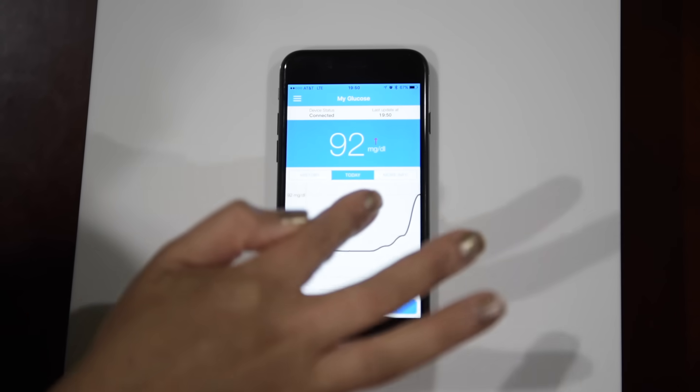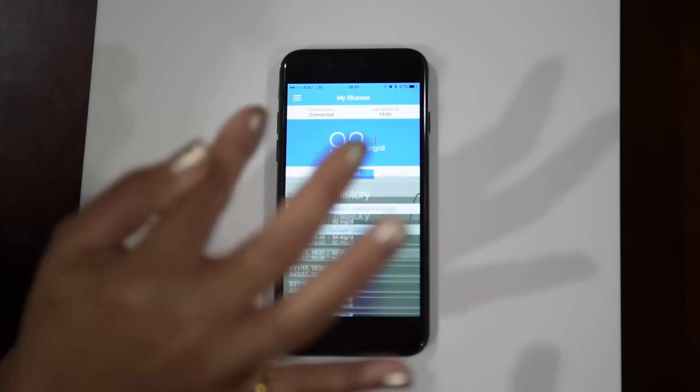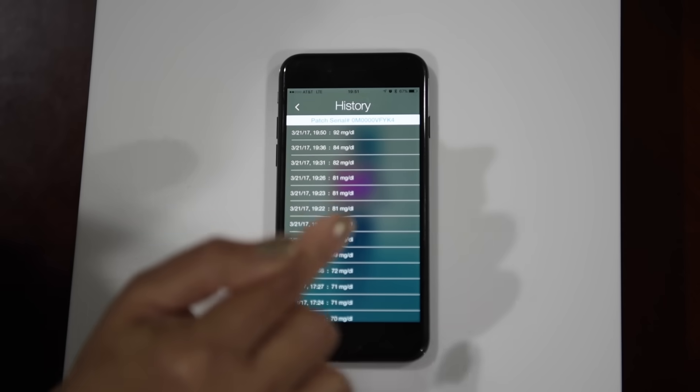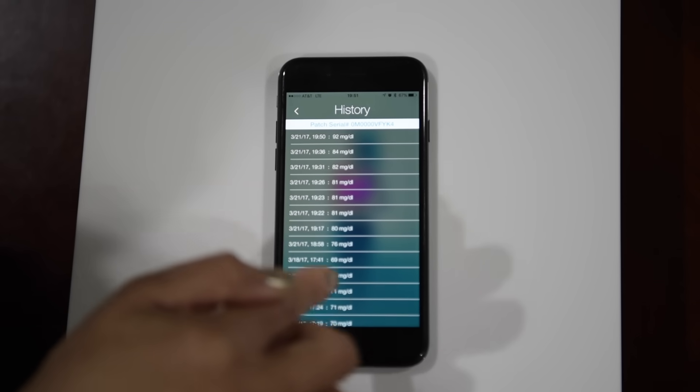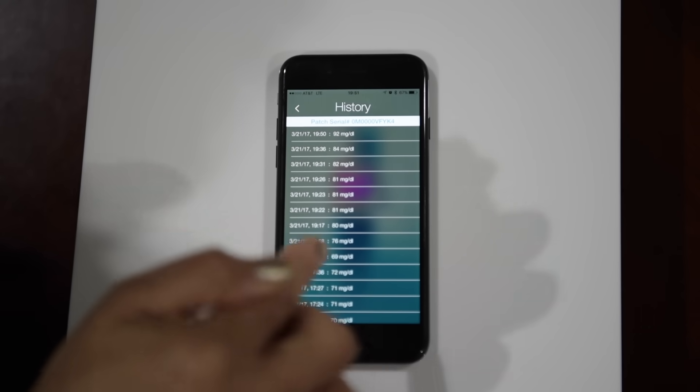Readings will be updated every five minutes. If you want to see the previous readings, tap on the history tab and it will show all the readings since the sensor was activated.